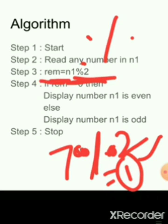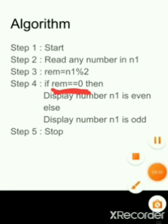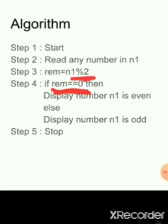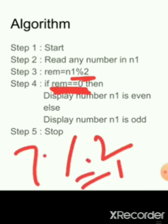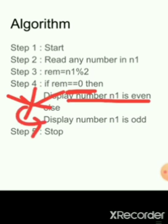Now we check whether the remainder is equal to 0 — that means we check whether the number was divisible by 2 or not. In our example, 7 % 2 gives remainder 1. Since 1 is not equal to 0, it will not display 'number is even.' It goes to the else part and prints 'number is odd,' then the program stops.